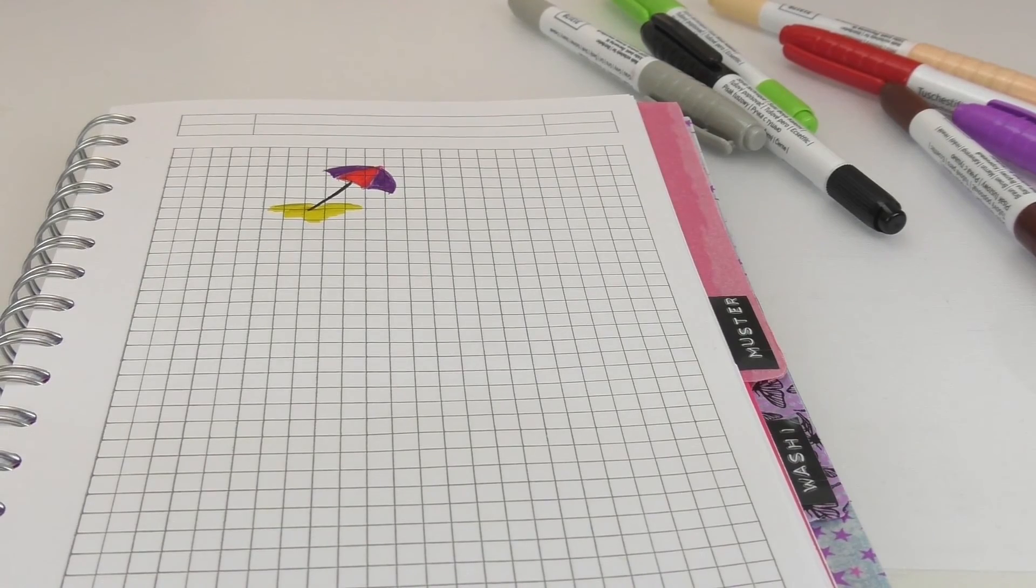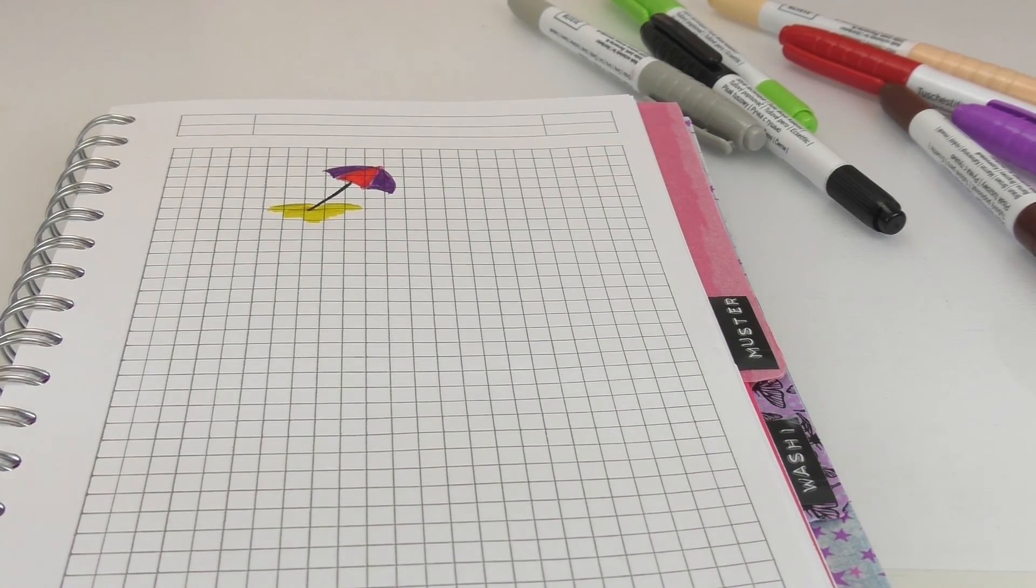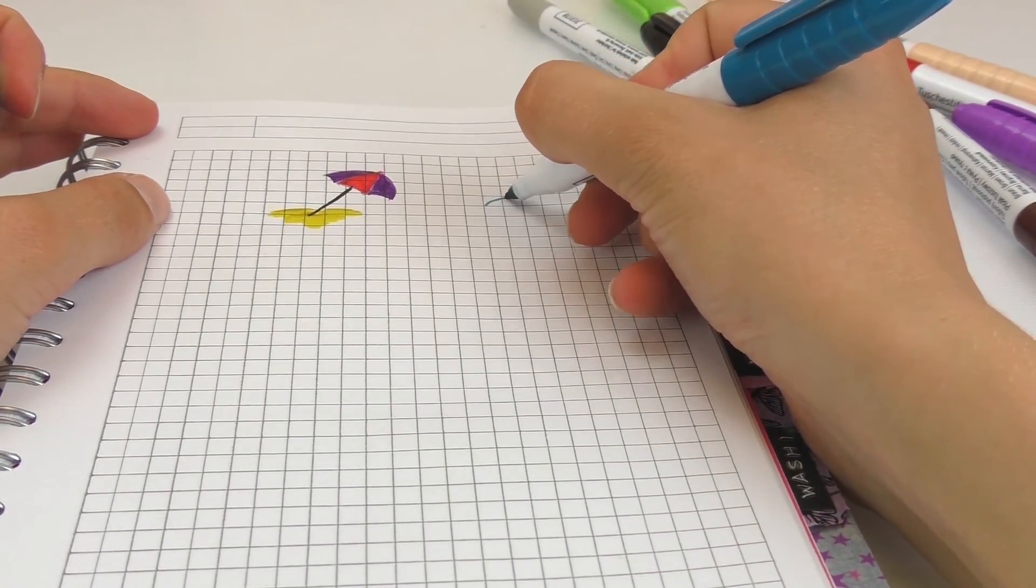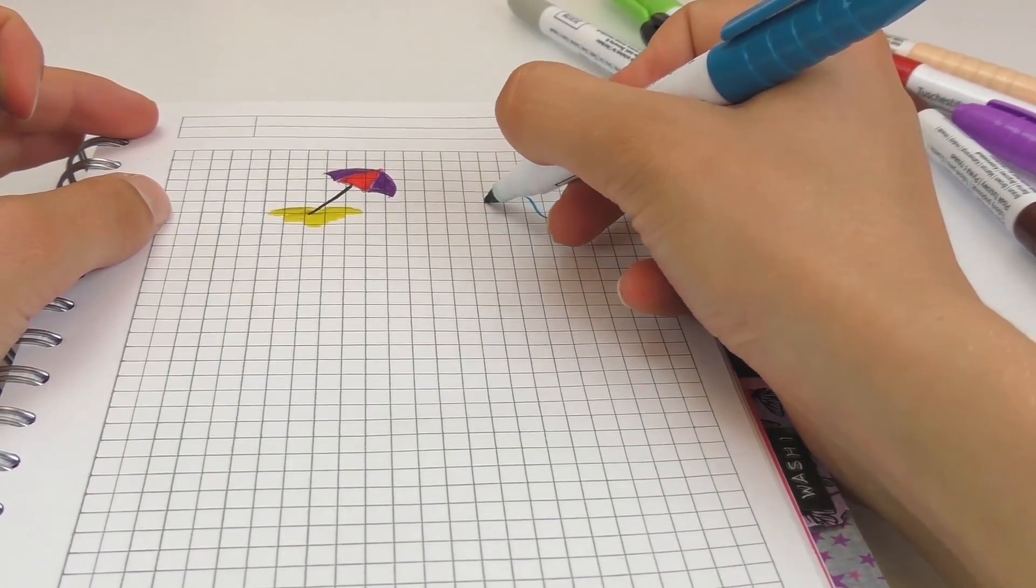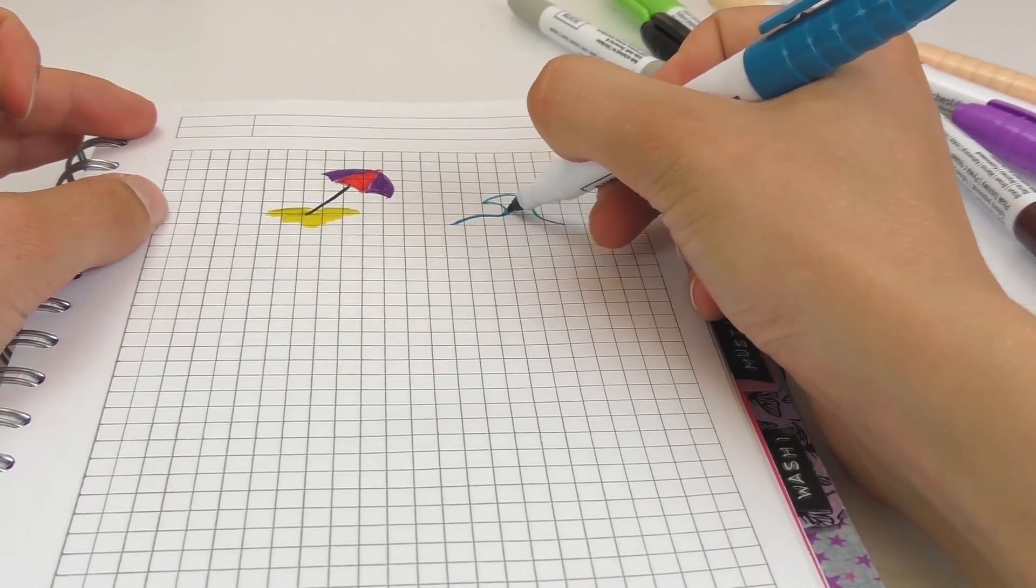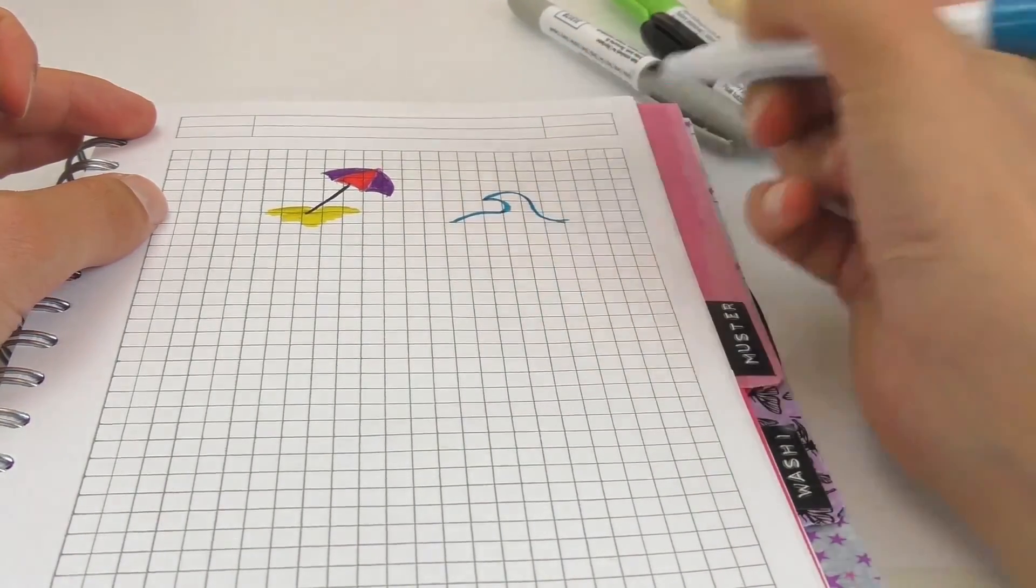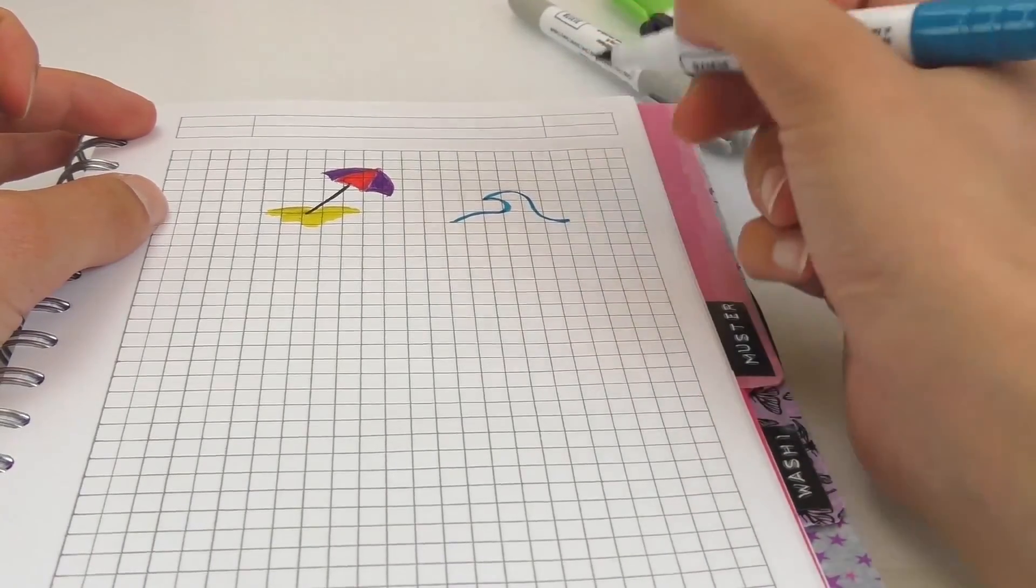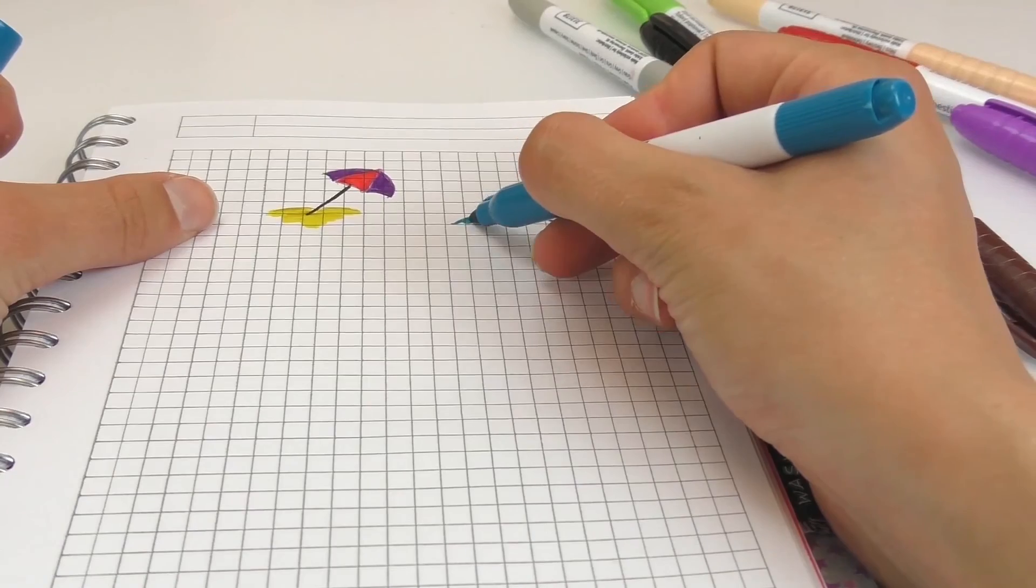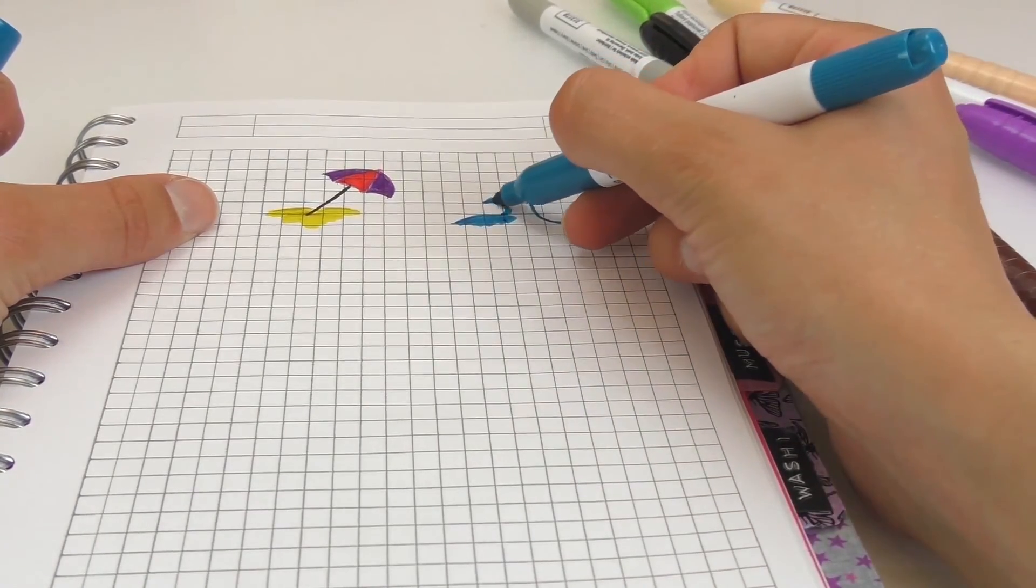Our next one, the next one will be kind of like a lake or like a sea, the waves. We can use different colors of blue, for example.